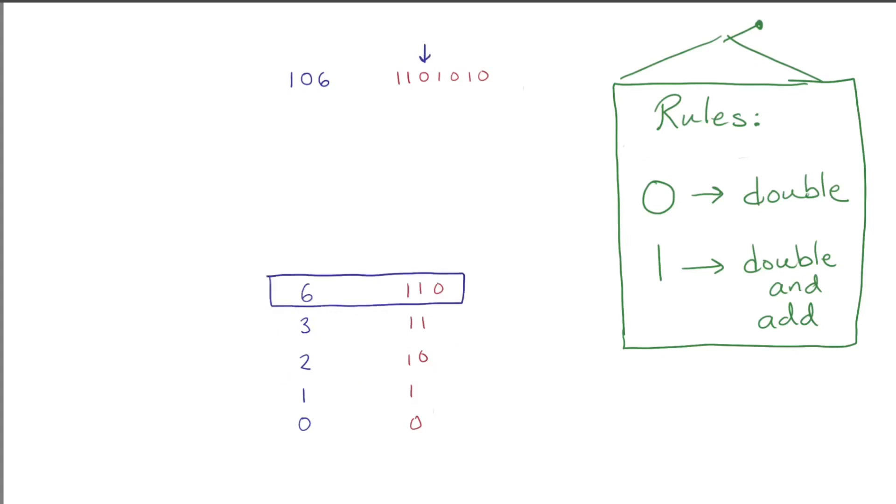Then a zero digit, so we double. Then a one, double and add. Then a zero, so we double. Then a one, double and add. Then a zero, so we double, and we're done. That's it.